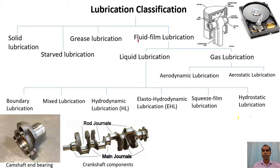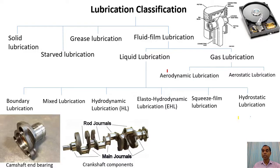So we discussed different types of lubrication: solid lubrication, starved lubrication, grease lubrication, and fluid film lubrication. Fluid film lubrication can be divided into liquid lubrication and gas lubrication. Liquid lubrication includes boundary lubrication, mixed lubrication, hydrodynamic lubrication, elasto-hydrodynamic lubrication, squeeze film lubrication, and hydrostatic lubrication. Gas lubrication is basically of two types: aerodynamic lubrication, where air is mostly used, and aerostatic lubrication.